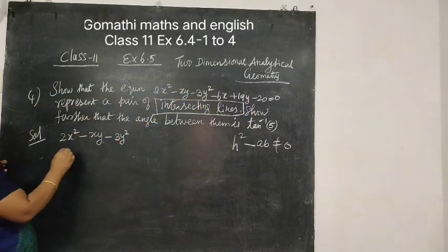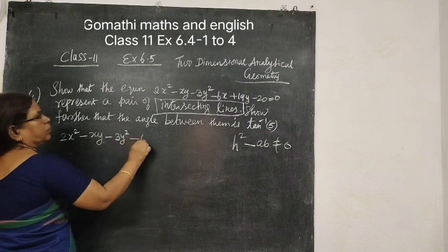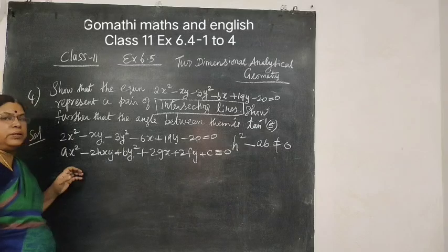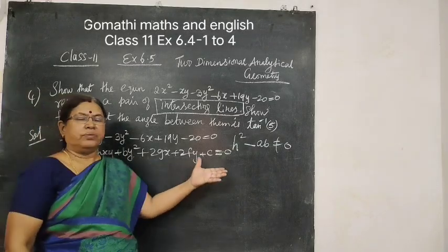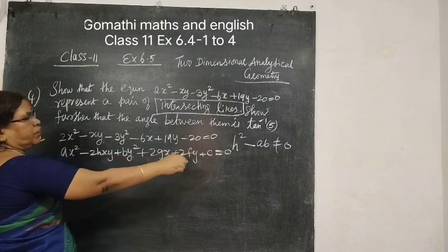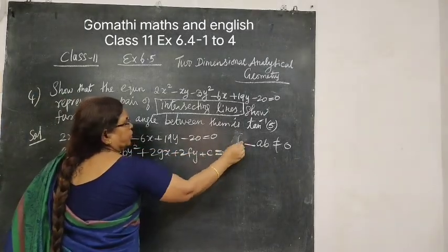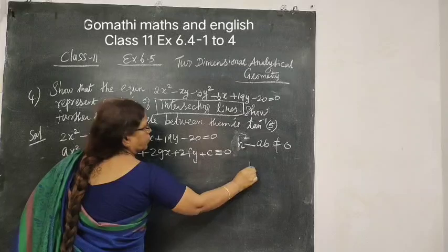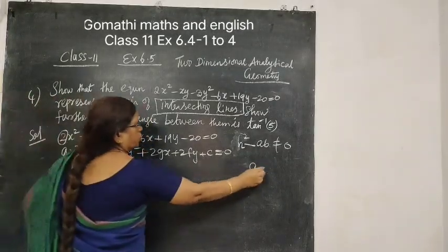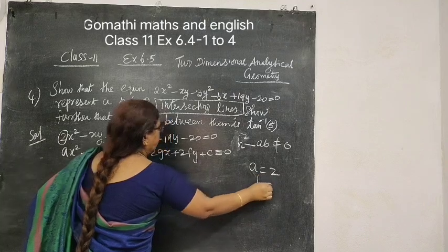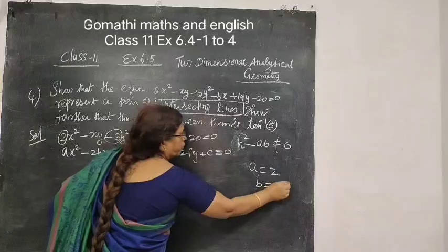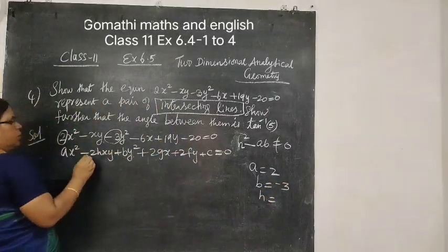This is the equation 2x squared minus xy minus 3y squared minus 6X plus 19Y minus 3. This is the general equation of a pair of straight lines. Now let's compare this. First, A is equal to 2, then B equal to Y squared coefficient, so minus 3.